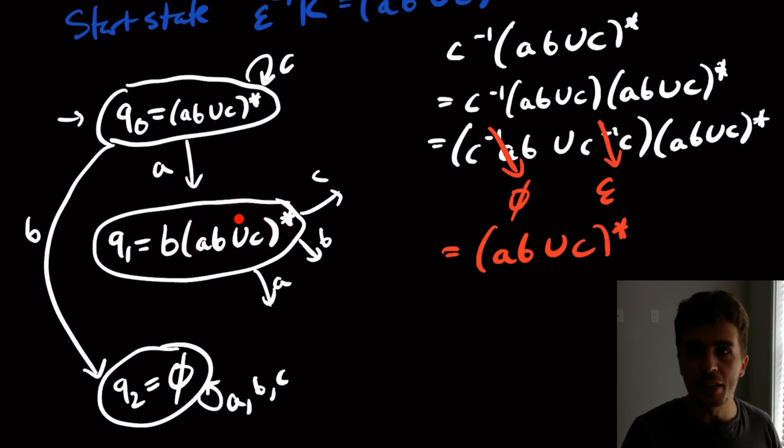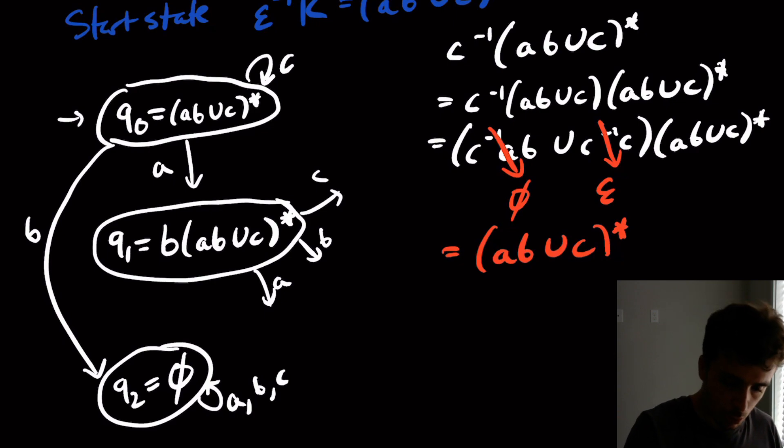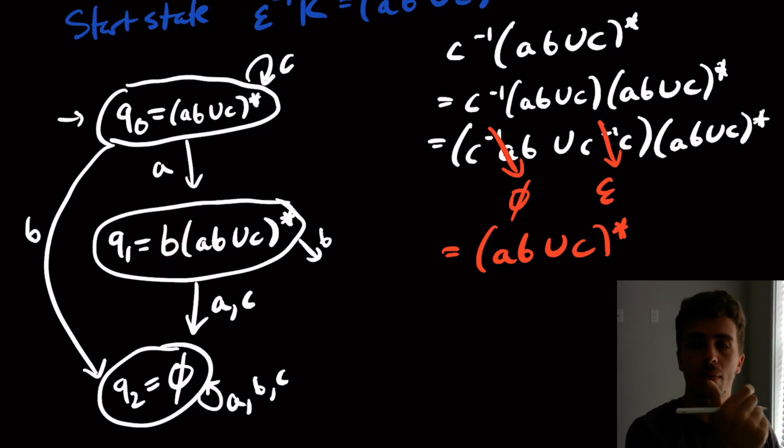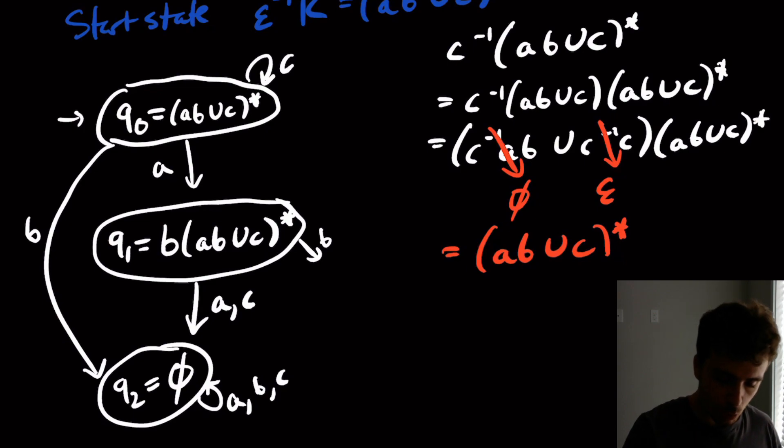But this one is actually a lot easier, and I'm not going to go through the calculation because we have this B out on the front. So if I apply the derivative with anything other than B, I'm going to get the empty set because A inverse B is going to give us empty set and everything is concatenated together anyway. So we can determine that A and C are going to come down here. But if we apply B inverse to this, the B inverse with B is going to cancel, which is going to leave us with AB union C star, which is this state up here.